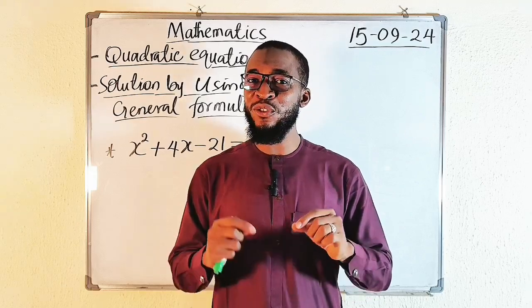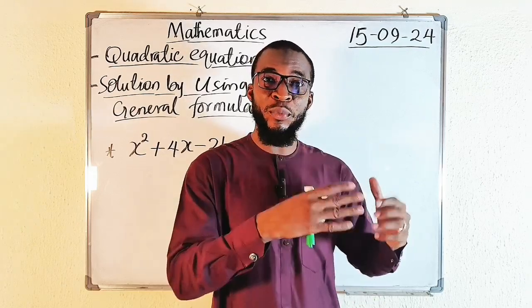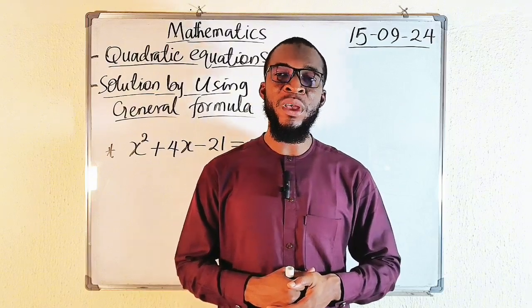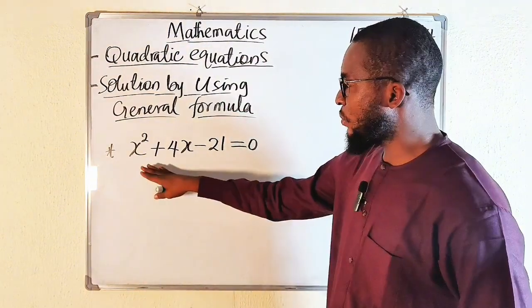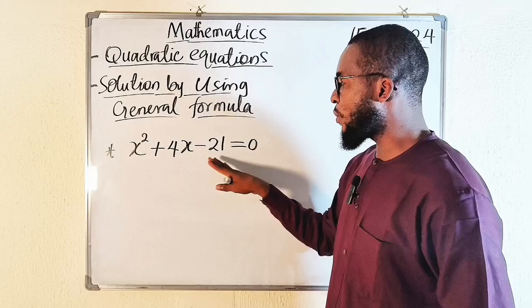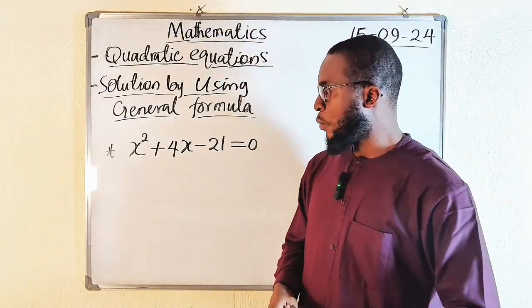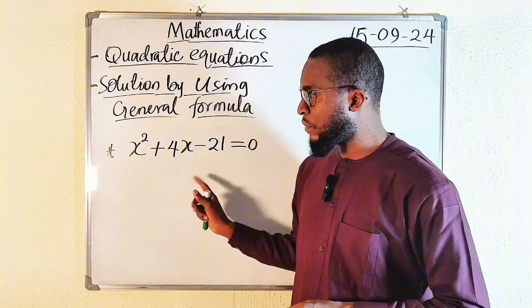You should also be able to use that formula to solve some word problem questions related to quadratic equations. So this is what we have today: x squared plus 4x minus 21 equal to 0. This is a quadratic equation. We would like to use the general formula to solve this problem.